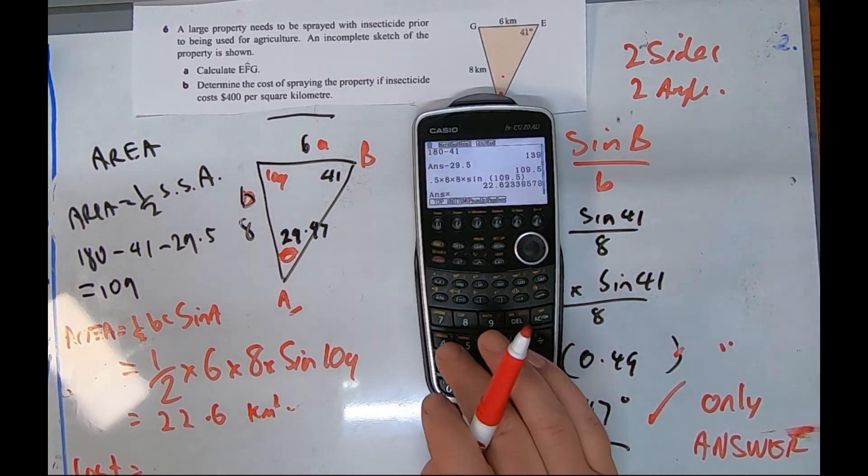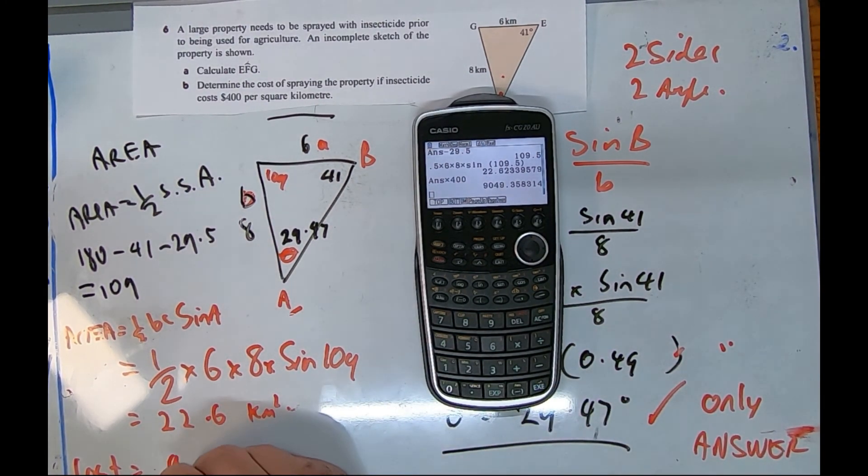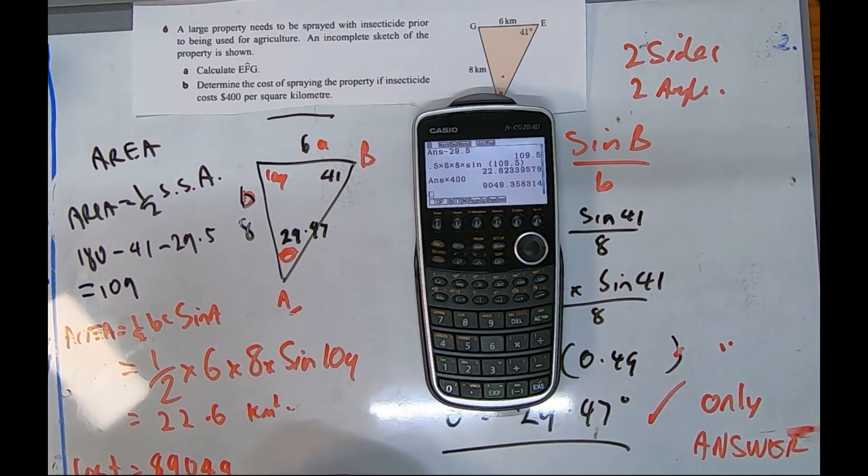Cost equals that number times 400. Shift answer times 400. Did I say five? I don't think I did, pretty sure I did not say five. Around about ten thousand dollars is the answer to this question.